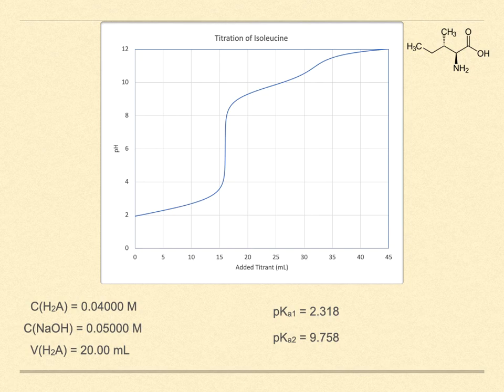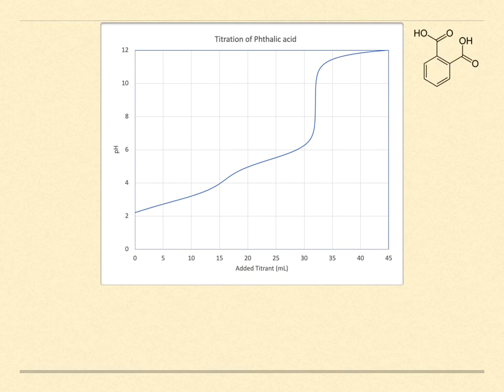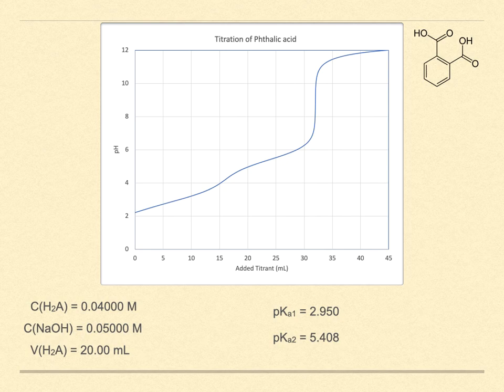Here's another example. This is phthalic acid. The pKa values are 2.950 and 5.408. They're a bit further apart than in the case of fumaric acid. You can see that there is a first equivalence point, but the second one is still the best one to extract the most accurate information. The same ideas extend to triprotic and higher systems, but they become more congested as more acid-base sites participate in the titration process. We characterize these as blurred endpoints.